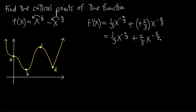Once you have the derivative function, your next step is to look for values of x that make the derivative either equal to zero or undefined. We set the derivative function equal to zero and solve. We can factor the right-hand side: factor out 1/3 and also factor out x to the negative 2/3.